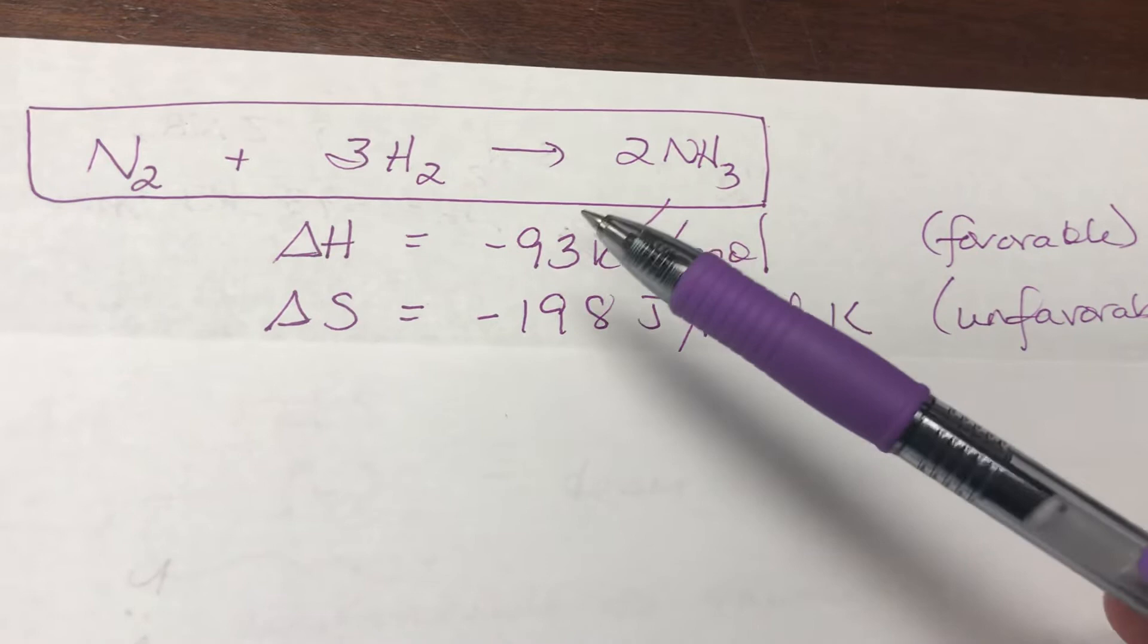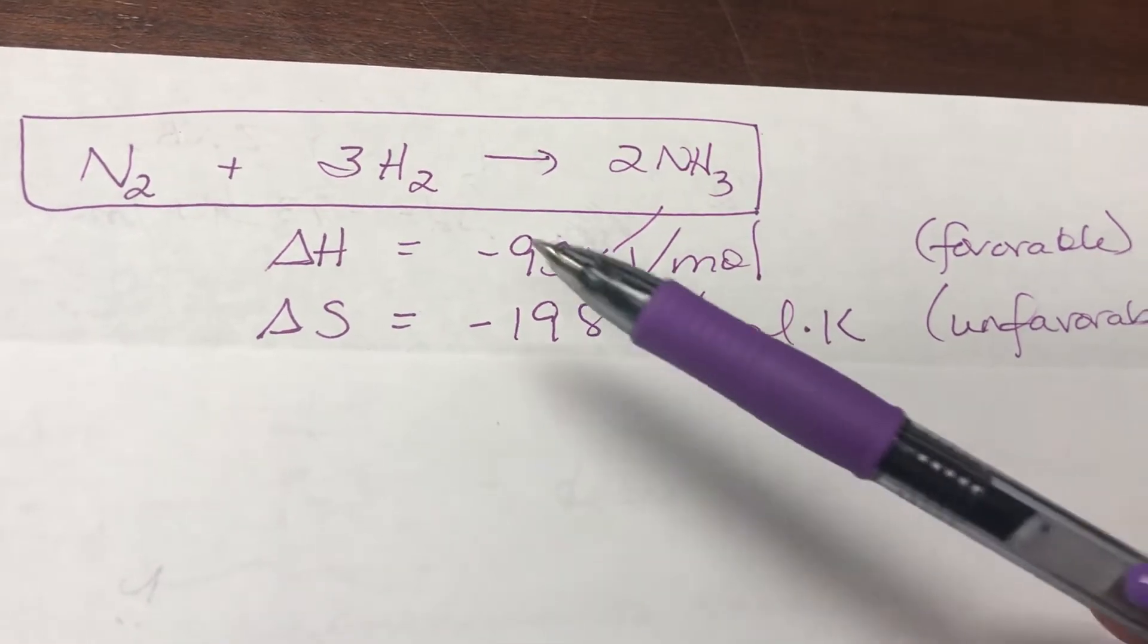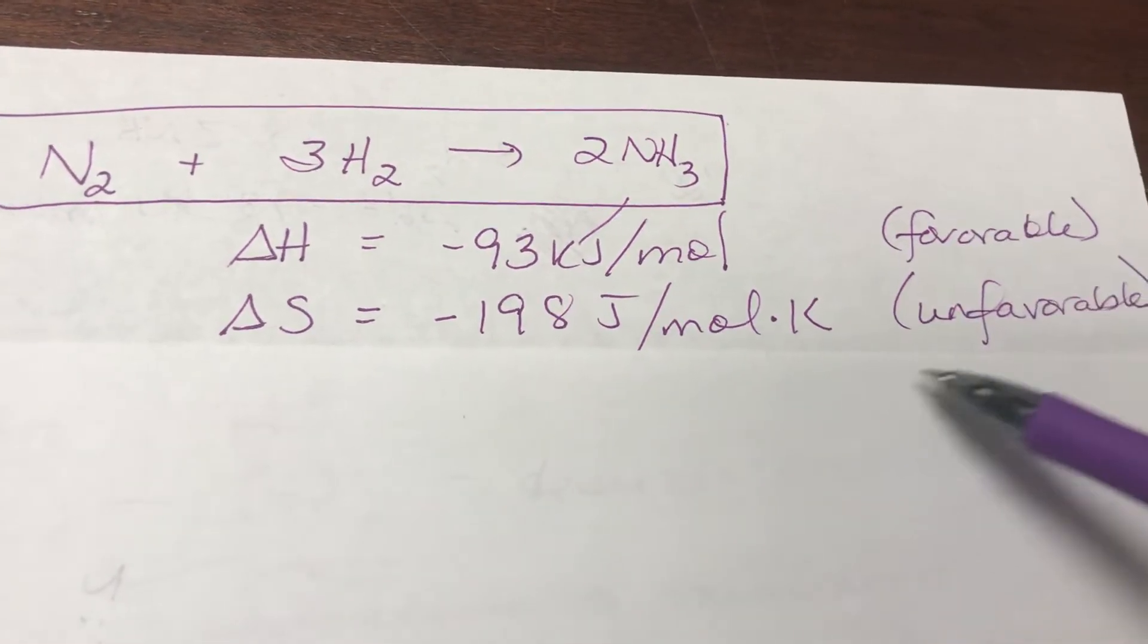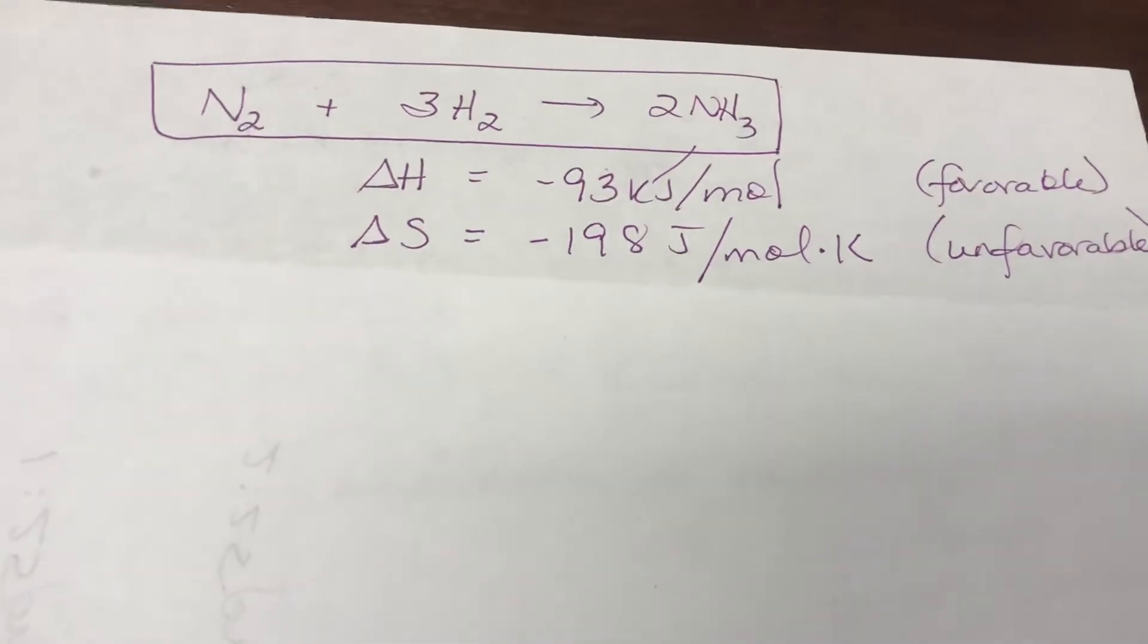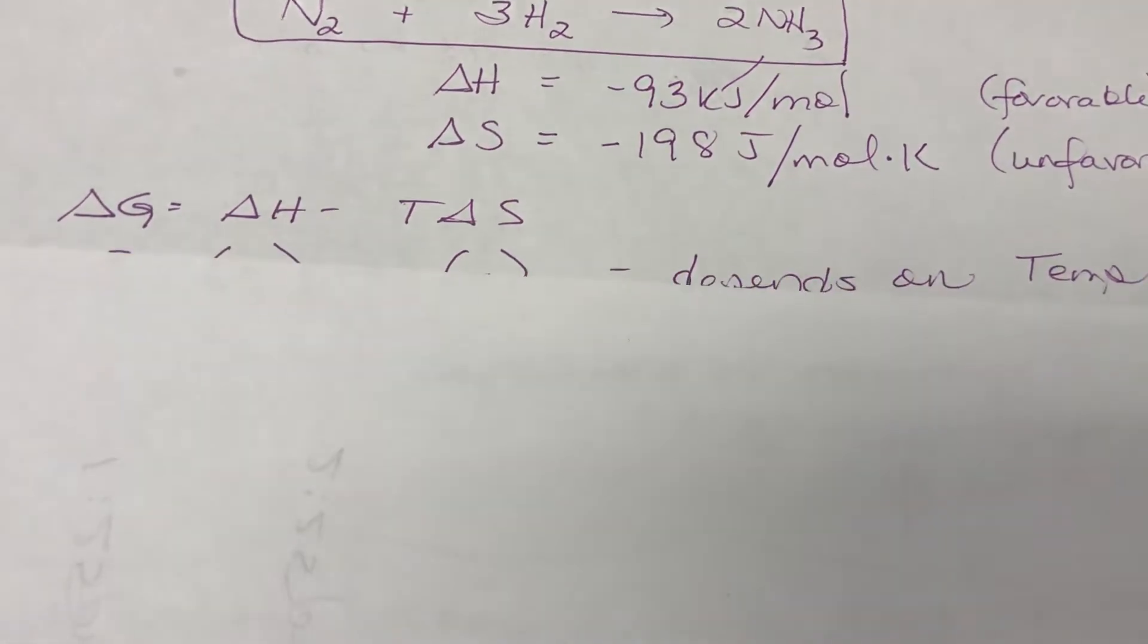So in this case both are negative. Enthalpy is favorable. Entropy is not favorable. So let's talk about the concept of that first.